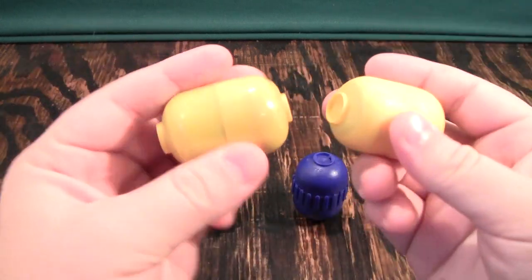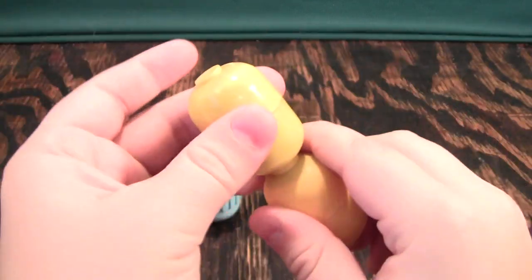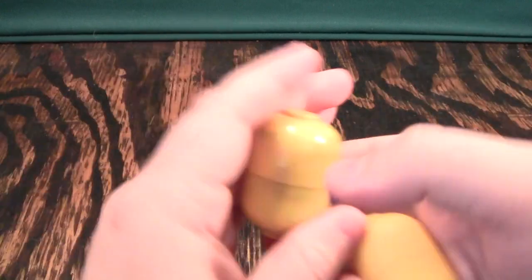On a normal Kinder Surprise egg capsule, they can combine on the top and bottom like this, kind of like Legos, and that's the only way they can combine.